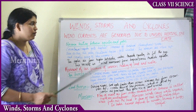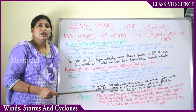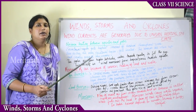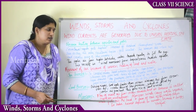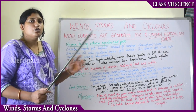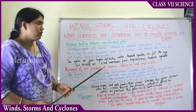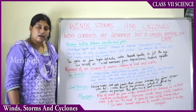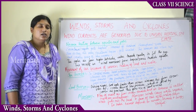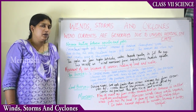Whenever the land is heated up, warm air rises up, leaving empty space. This empty space is occupied by cooler air from the surroundings, resulting in wind movement from the tropical zones toward the equator. Wind usually moves from north to south, but sometimes changes in direction occur due to the rotational movement of the earth.